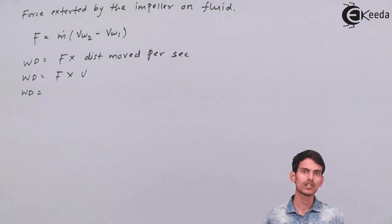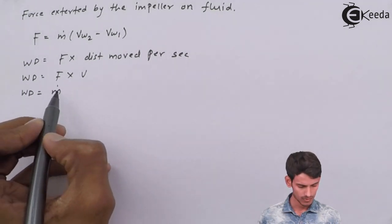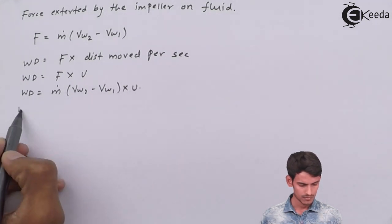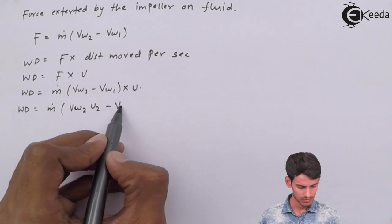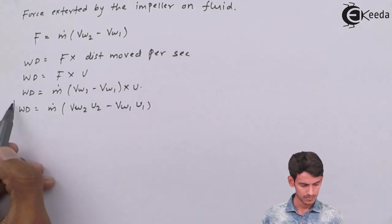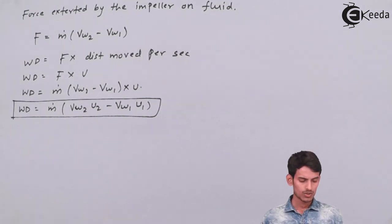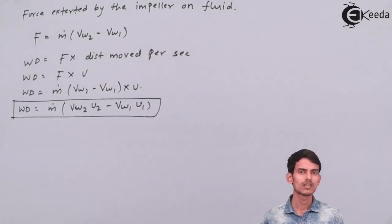Work done is nothing but force times distance moved per second, and distance moved per second is velocity U. So the work done formula becomes W = m-dot × (Vw2 − Vw1) × U. You can also write m-dot as rho times Q, since mass flow rate equals rho times Q.